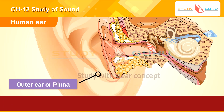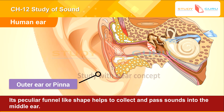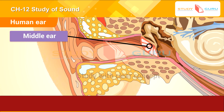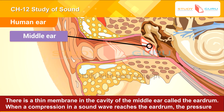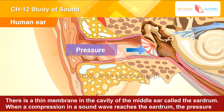The outer ear, or pinna, collects the sound waves and passes them through a tube to a cavity in the middle ear. Its peculiar funnel-like shape helps to collect and pass sounds into the middle ear. There is a thin membrane in the cavity of the middle ear called the eardrum.